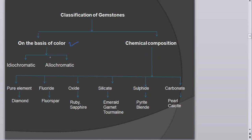Another classification is based on color. Idiochromatic color is the self-color of a mineral, like blue azurite — that is the mineral's own color. Allochromatic minerals are those that appear a certain color due to impurities. For example, amethyst is a variety of quartz, but due to iron impurities it appears violet. Rosy quartz and milky quartz are other examples of allochromatic minerals.